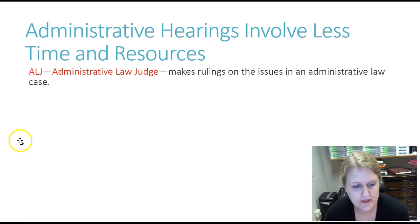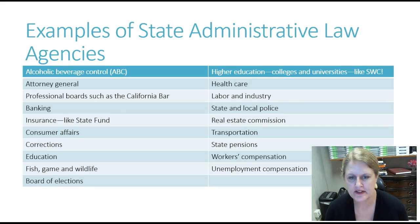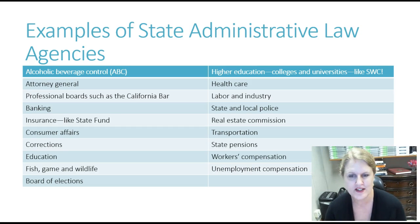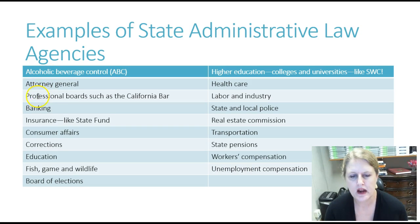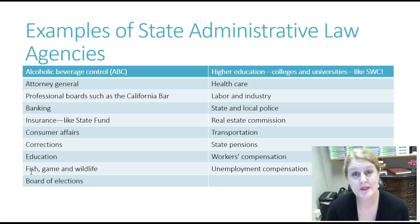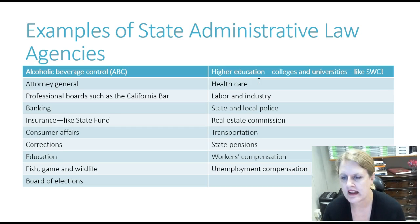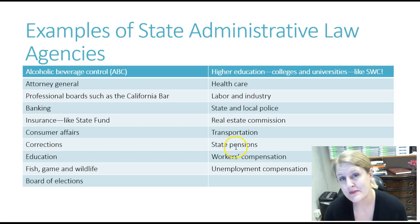I've given you a table with some more examples of state administrative agencies. We've got alcoholic beverage control — called different things in different states — education, fish, game and wildlife, higher education like colleges, healthcare, some state pensions, workers compensation, and unemployment compensation.